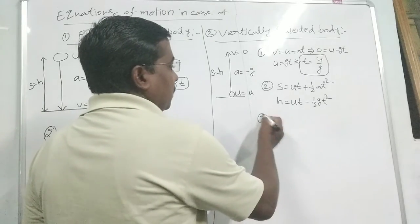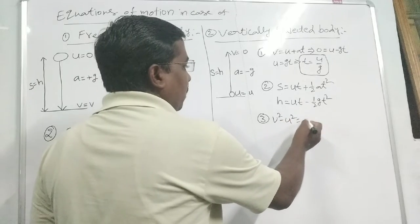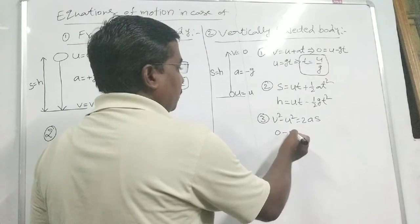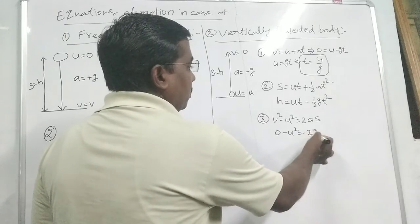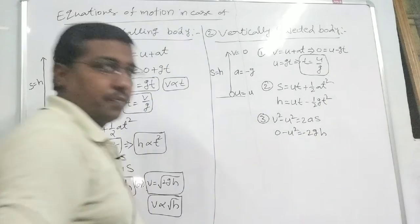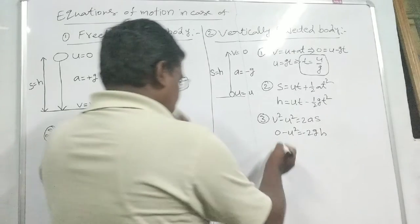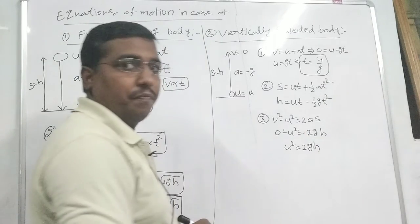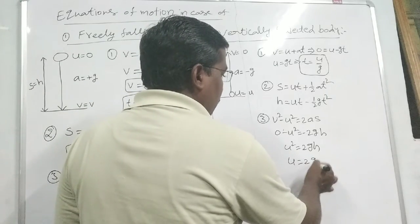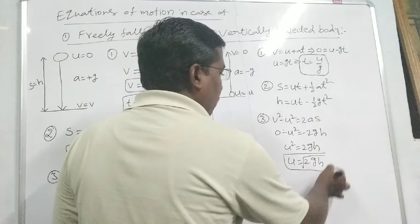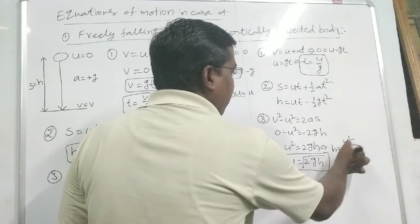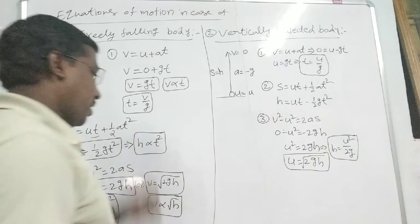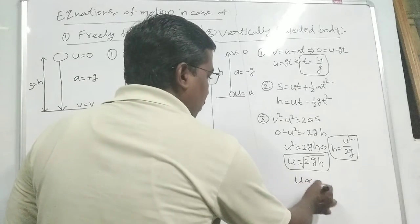The third equation of motion is V² − U² = 2aS. Substituting V = 0, A = −g, and S = H, the negatives cancel to give U² = 2gH, so U = √(2gH), or equivalently H = U²/2g. We also note that U is proportional to √H.